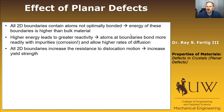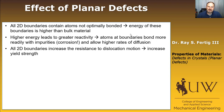All 2D boundaries increase the resistance to dislocation motion, which means you should see an increase in yield strength. If you increase the density — the number of boundaries per unit volume — you should see an increase in strength. Ten grains that are one micron across have far more dislocation barriers than one grain that's 10 microns across. So we're going to use 2D boundaries as a way to increase strength in our metals.